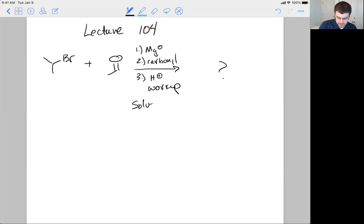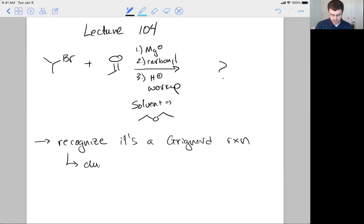And I said solvent was equal to this molecule. Okay, what would I want you to do? How would I want you to approach this problem? First of all, I would want you to recognize it's a Grignard reaction. So it's a Grignard reaction. And the clue there is Mg0.